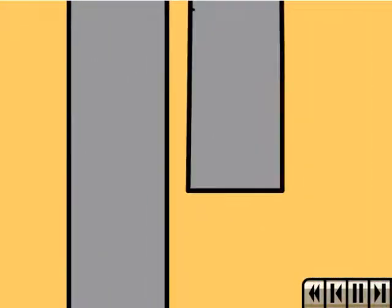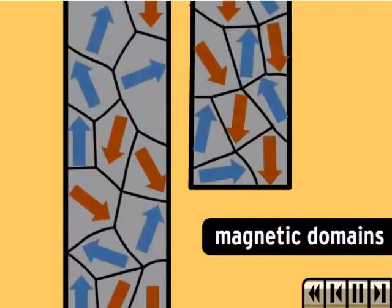Pieces of metal like paperclips have arrangements of atoms inside them called magnetic domains. The poles of these domains are all randomly organized, so they pretty much cancel each other out.